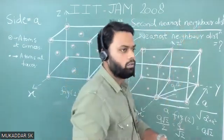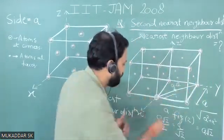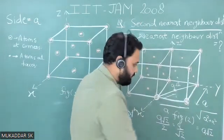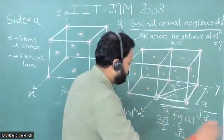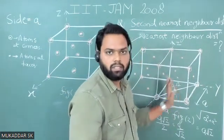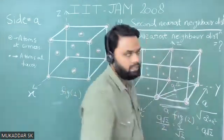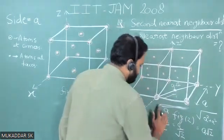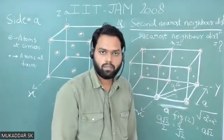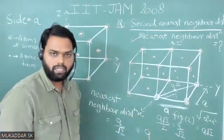Now we need the second nearest neighbor distance. After the nearest neighbor at a/√2, the next candidate is the corner sphere at distance a. The face diagonal distance a√2 is bigger than a, so a√2 is not the second nearest neighbor. Therefore, the second nearest neighbor distance is a.